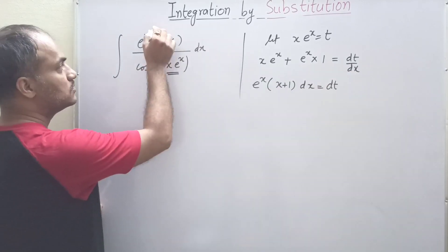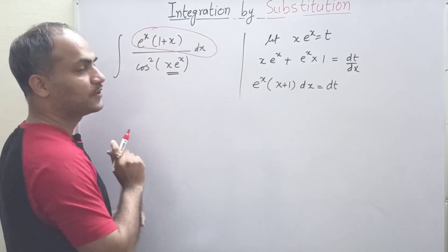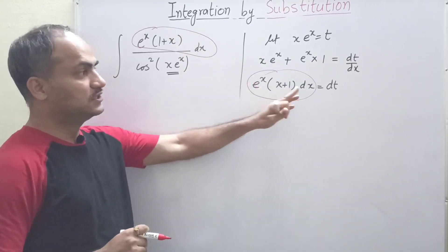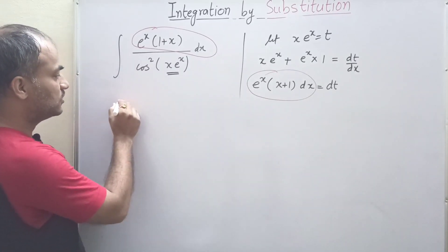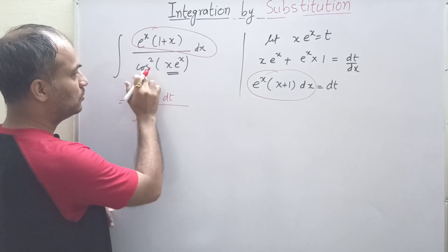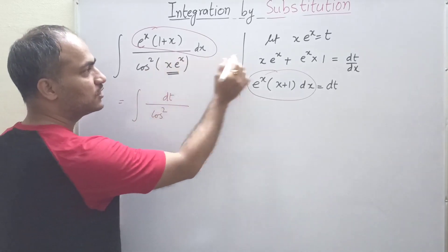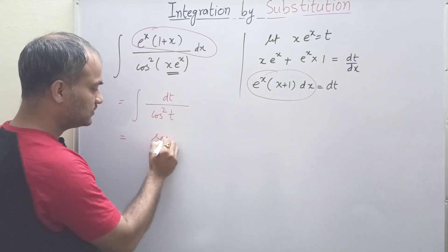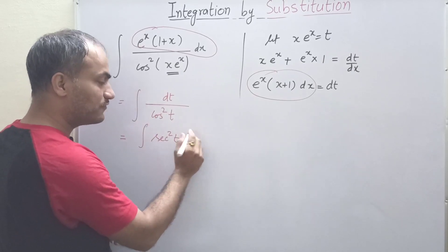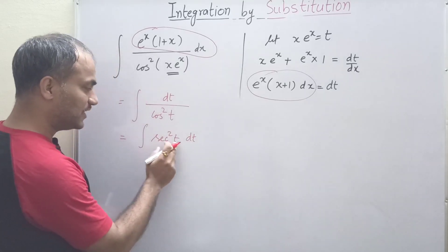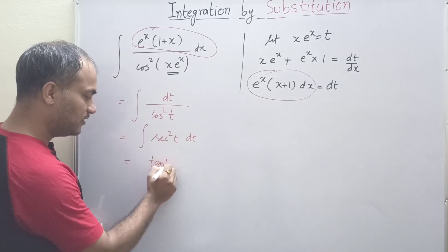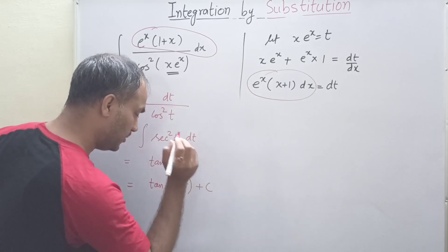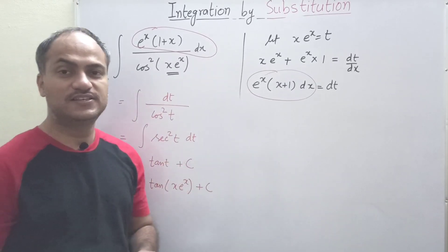Taking e^x common, we get (x + 1)e^x dx = dt. This value e^x(1 + x) dx is already present in the integral, so the question becomes the integral of dt/cos²(t). Now 1/cos²t is sec²t, and we have the direct formula: the integral of sec²t = tan t. So the final answer is tan(x·e^x) + C. This shows how the method can reduce a question to a direct formula.